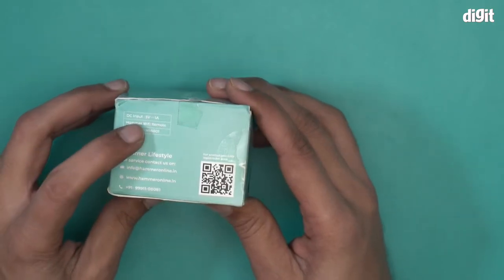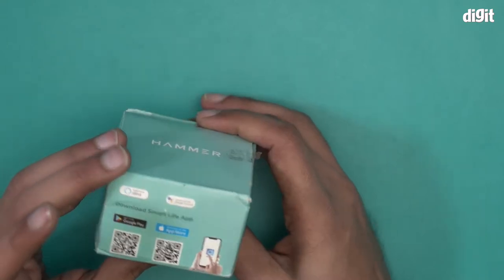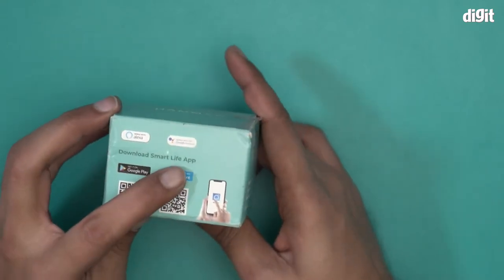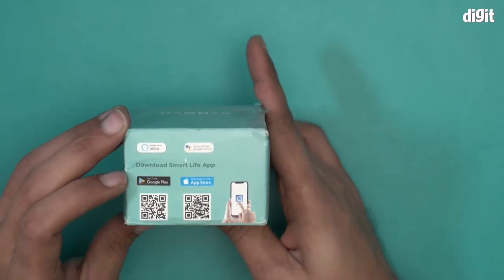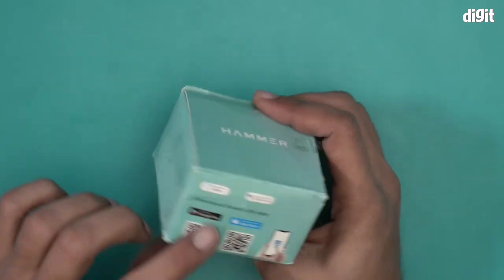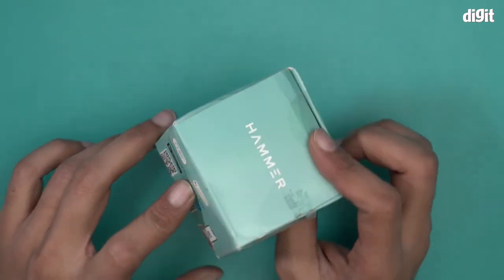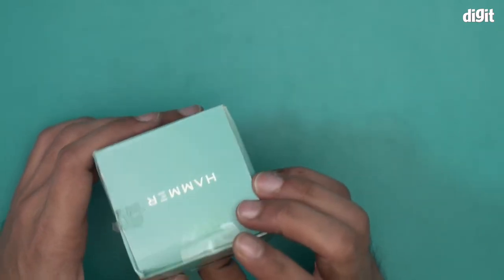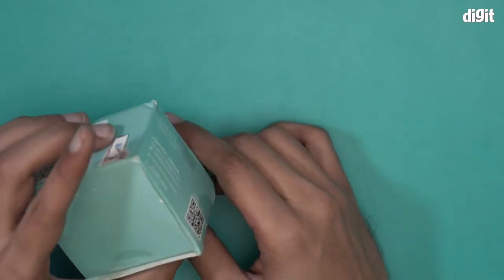outside the fact that this requires a DC input of 5 volts, which is pretty standard. You have to download the Smart Life app to operate this device. This device also supports Alexa and Google Assistant. I will now open this box and show you what's inside.